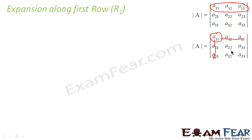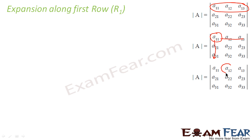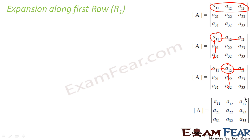We can find the determinant of this 2×2 matrix — we have done this before. Once we are done with the first element, we can select the second element. Draw a horizontal line and a vertical line touching that element, and the four remaining elements form another 2×2 matrix. The third step will be to take the third element, draw horizontal and vertical lines, and you get another 2×2 matrix. Find the determinant of all three, multiply with the respective numbers, add them, and you get the determinant of the whole 3×3 matrix.